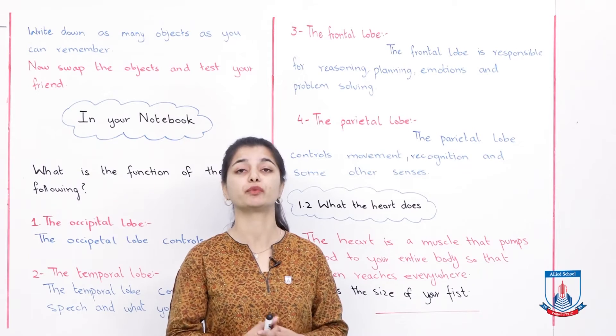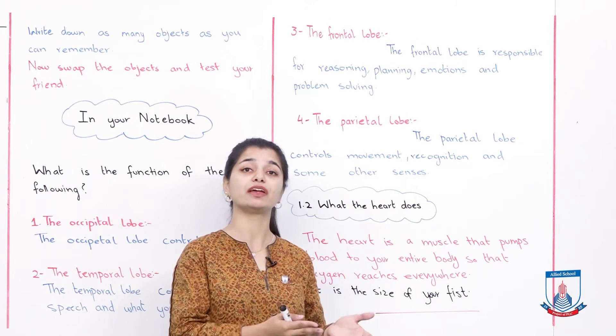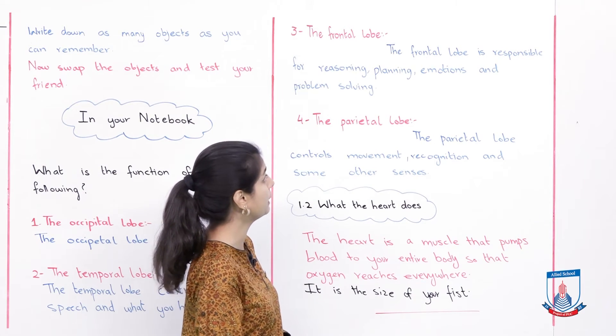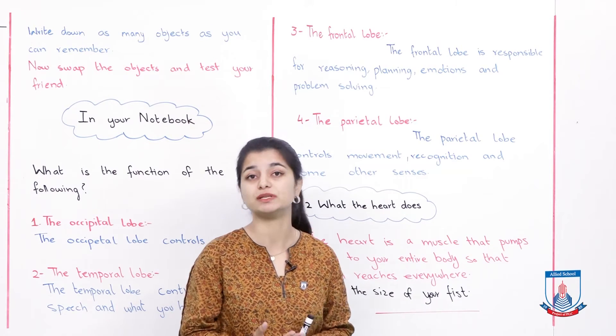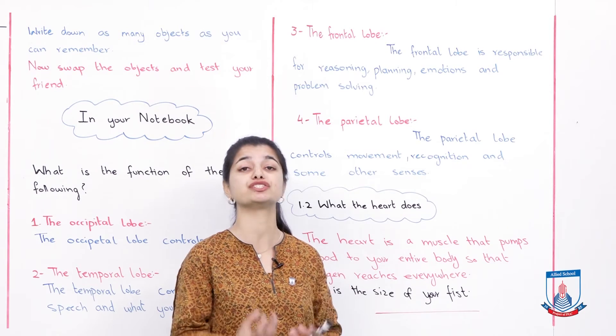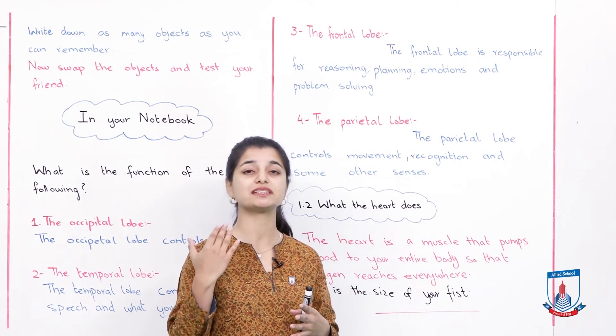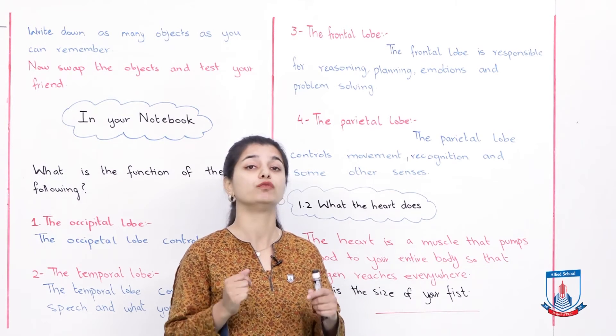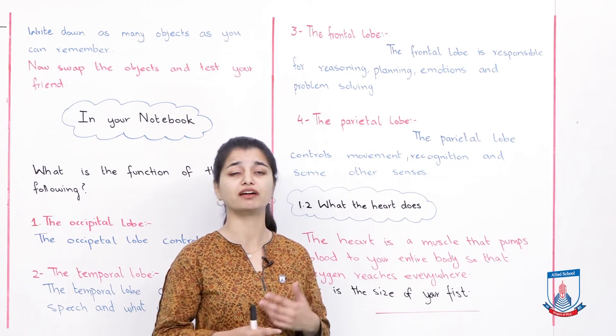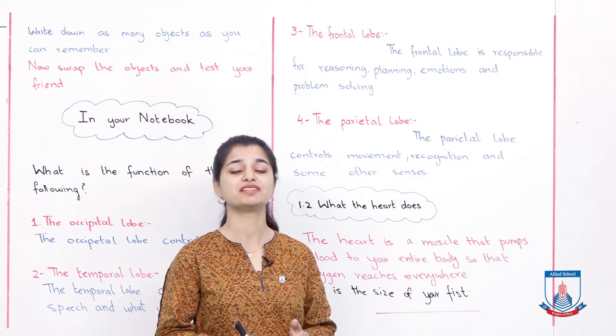The third part is the frontal lobe. The frontal lobe is responsible for reasoning, planning, emotions and problem solving. This is basically your intellectual side - how you reason your actions and arguments, how you think. Your planning and problem solving are controlled by the frontal lobe. Basically how sharp your brain is, how fast your thinking. The thinking process, emotions - all those emotions are controlled by your frontal lobe.